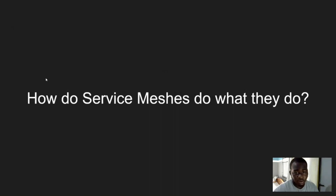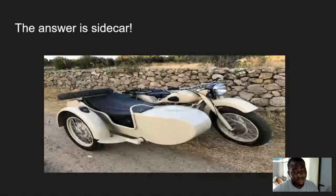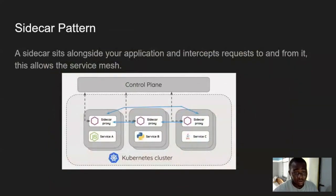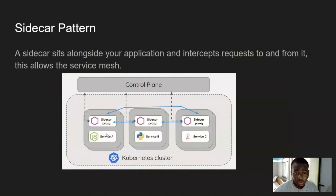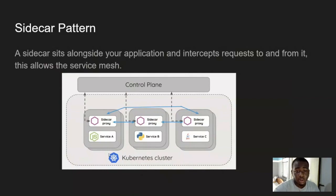Now that we have a good idea of what a service mesh is, how does it work? The answer is pretty simple — the answer is a sidecar. Service meshes use something called the sidecar pattern. The sidecar essentially sits alongside your application and intercepts requests to and from it, allowing the service mesh to provide extra features like security and observability. This is also how you are able to modify your service mesh without having to modify any application code. In a typical Kubernetes cluster, there is a sidecar sitting alongside services A, B, and C, so any rules or updates made to the service mesh are made to the sidecar proxy, not the application itself.